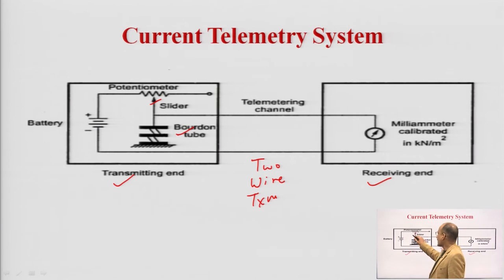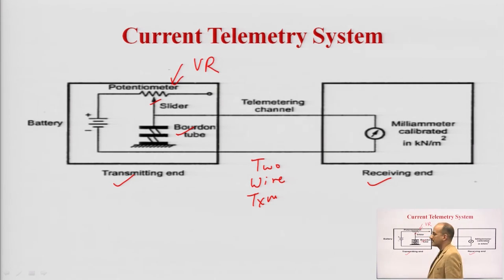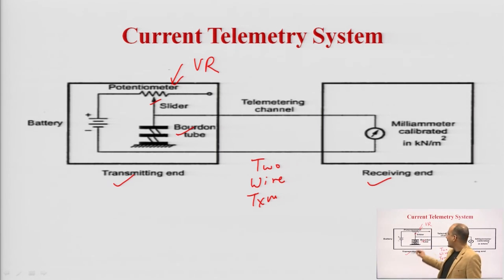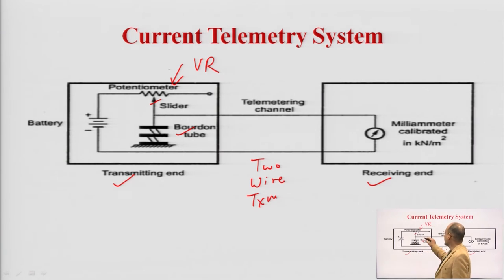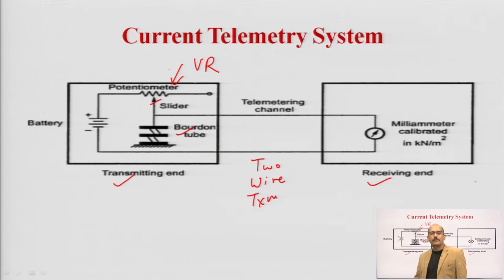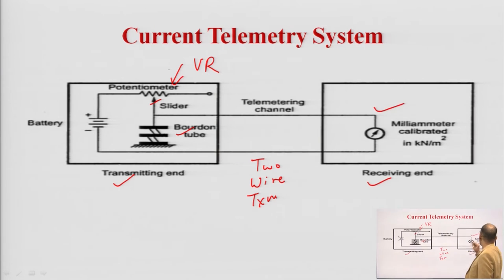The change in slider position changes the variable resistance. In the potentiometer, the value of the variable resistance changes as per the position of the slider. This change in resistance is converted into current because the system is connected in complete series. That current signal goes to the milliammeter calibrated system at the receiving end.